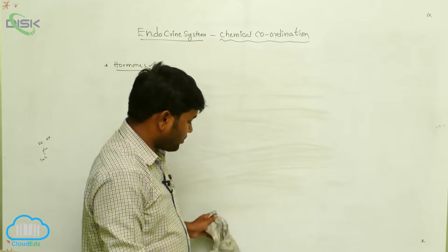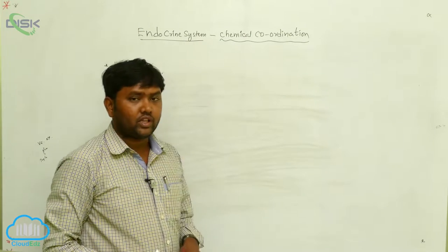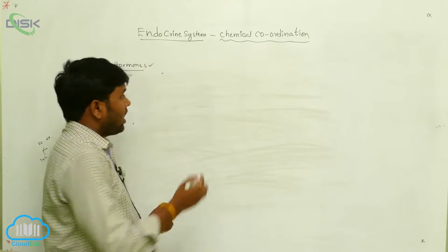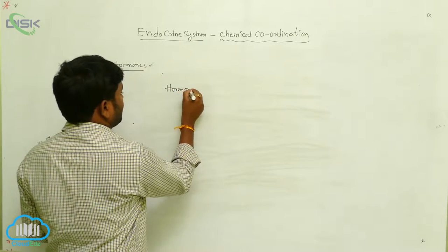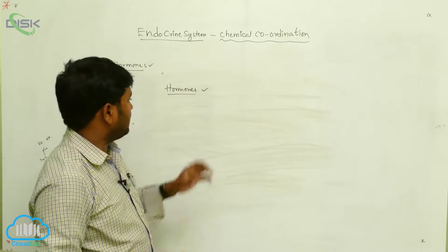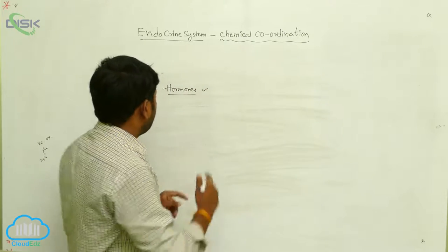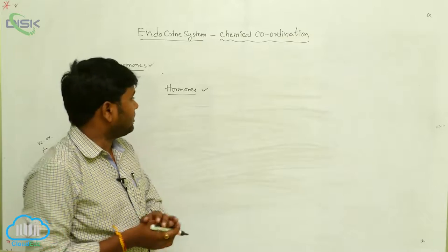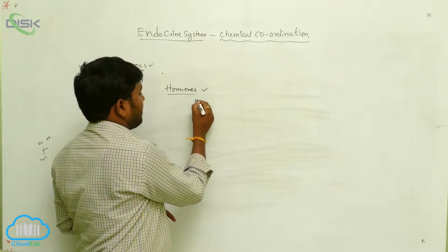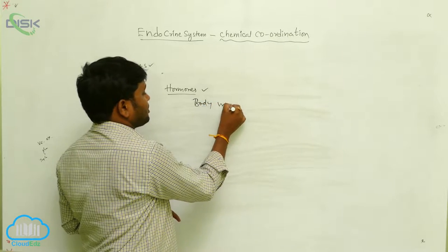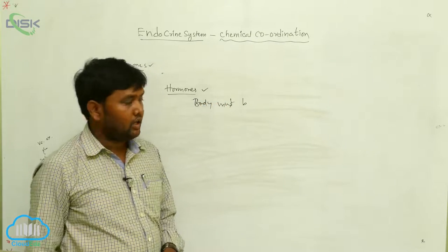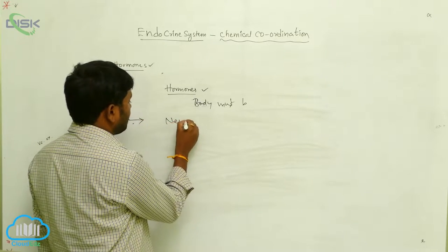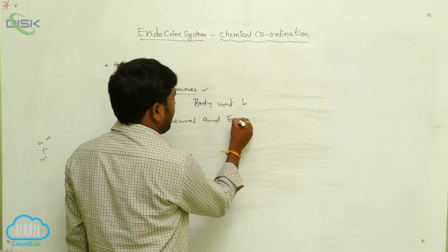For maintaining homeostasis and integration of animals, the interaction of hormones is very important. For maintaining homeostasis in the organs of the body, the body parts must be coordinated. That coordination will be provided by the neural and endocrine system.